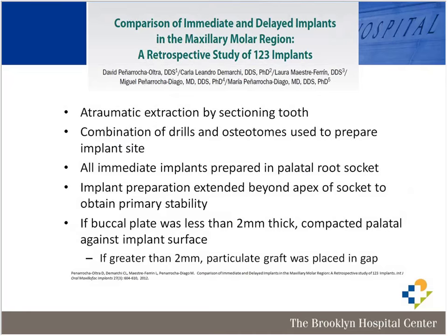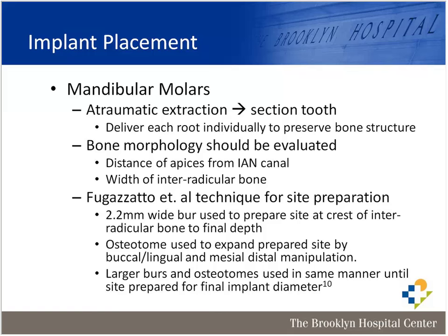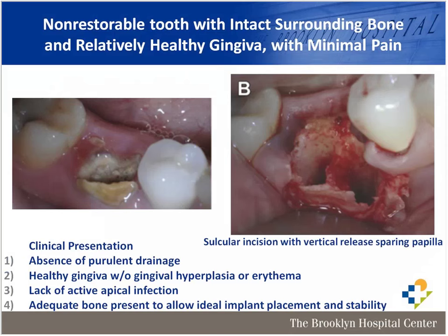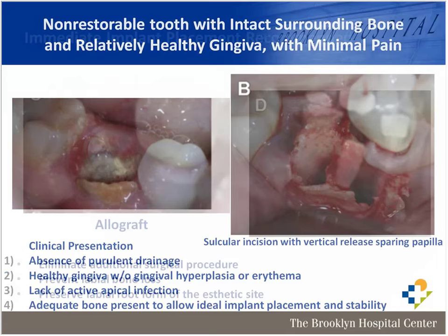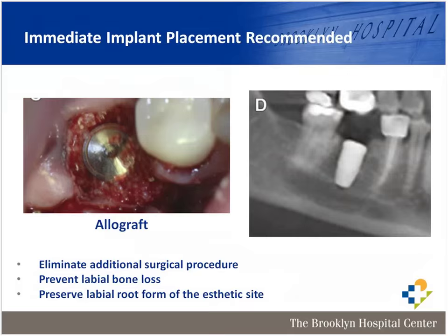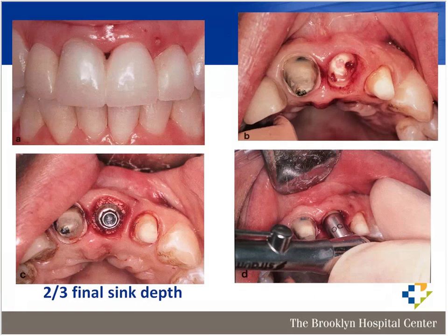For mandibular molars, the same surgical guidelines follow — atraumatic extraction, awareness of the inferior alveolar nerve canal. Go through the interradicular bone using an initial burr and then osteotomes to widen it. This is a case presentation of a mandibular molar atraumatic extraction with healthy gingiva — you use a 2.2-millimeter implant then use osteotomes to dilate the rest, then place your implant. There is good literature now supporting not only immediate implants but immediate temporization with immediate implants.